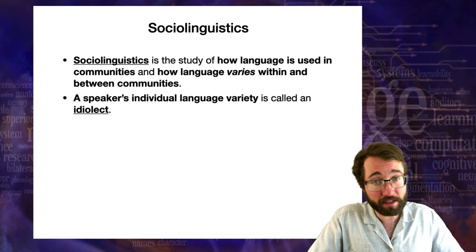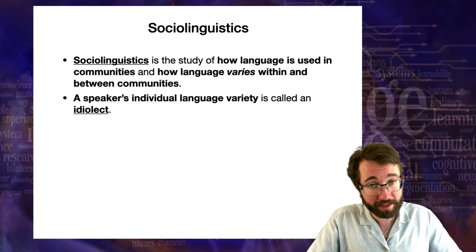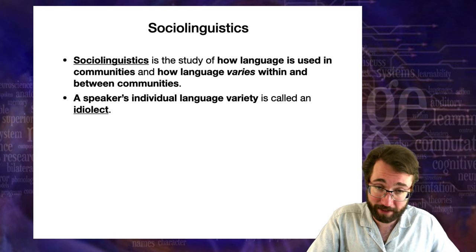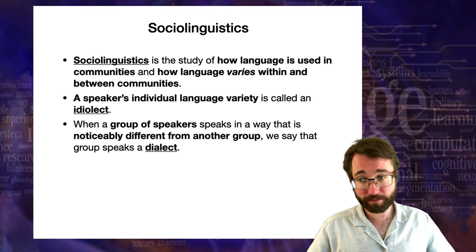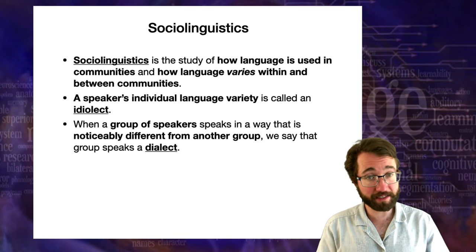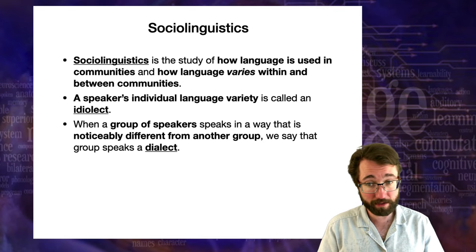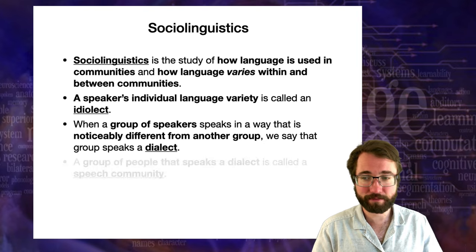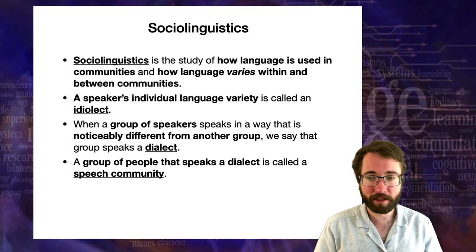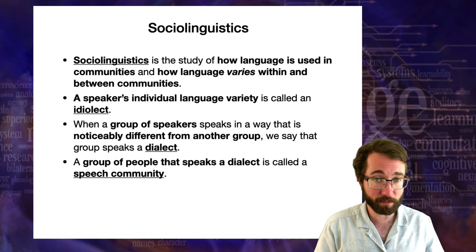A speaker's individual language variety is what's called an idiolect. Everyone speaks in a way which is slightly different from other people — that is their idiolect. When a group of speakers speaks in a way which is noticeably different from another group of speakers, we say that group speaks a dialect. And a group of people that speaks a dialect is called a speech community.